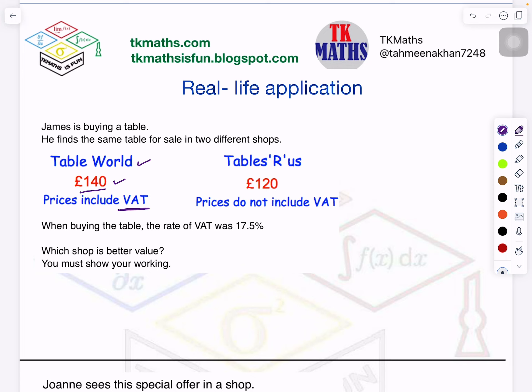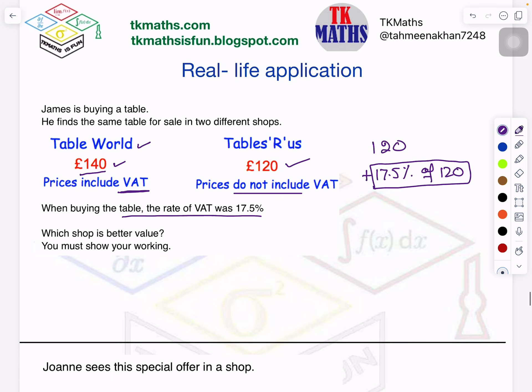But in the other case, the VAT is 17.5% and it is not included. So if you will buy from this shop you will pay 120 and you will also pay 17.5% of 120. So you need to know what is this amount equal to, because you have to pay this also. Only then we will know whether shop Tables R Us is cheaper or Table World is cheaper. So let's find out very quickly: 17.5% of 120. This cancels.